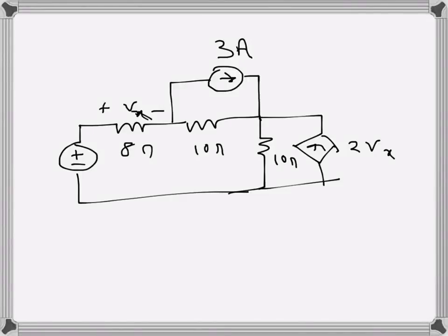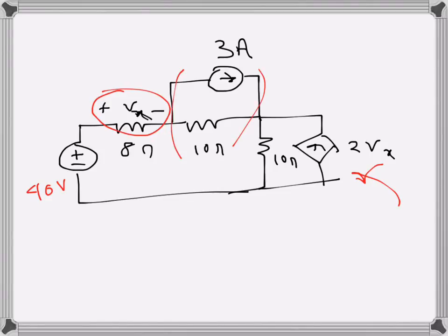I will find the unknown voltage Vx in this circuit using the source conversion technique. Vs is the control voltage of this voltage-dependent current source. Since this is the source conversion technique and 40 volts is given, I can convert this current source and the parallel resistance into a voltage source and a series resistance.